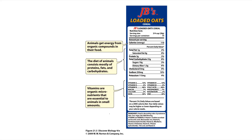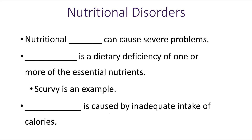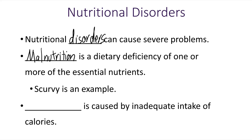Now we're going to talk about nutritional disorders, which can cause severe problems. One example is malnutrition — a dietary deficiency of one or more essential nutrients. Scurvy is an example, caused by a lack of vitamin C. In malnutrition, a person may be getting all the calories they need; they just aren't eating the right types of food. If you're only eating junk food all the time, you may not be getting all your vitamins and minerals, and that could be considered malnutrition.